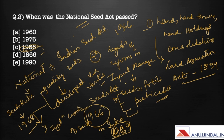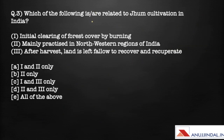To summarize: the National Seed Act was passed in 1966, Seed Rules were passed in 1968, and systematic certification of seeds started in India in 1969. Other important acts include the Fertilizer Control Act, Seed Control Order 1983, Seed Bill 2004, and the Protection of Plant Varieties and Farmers' Rights Act 2001.